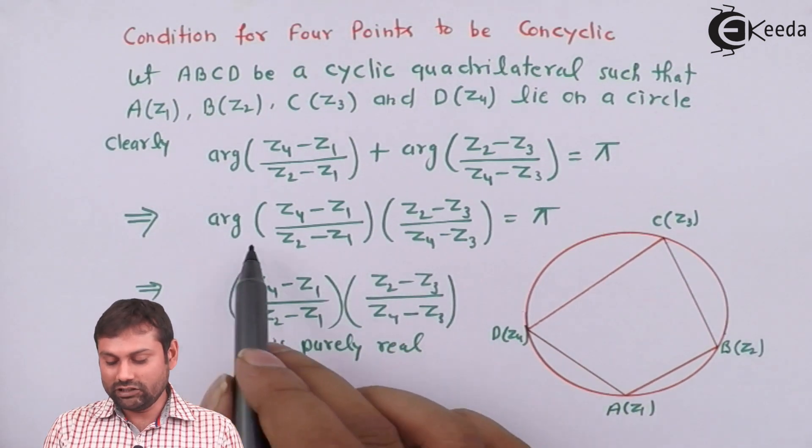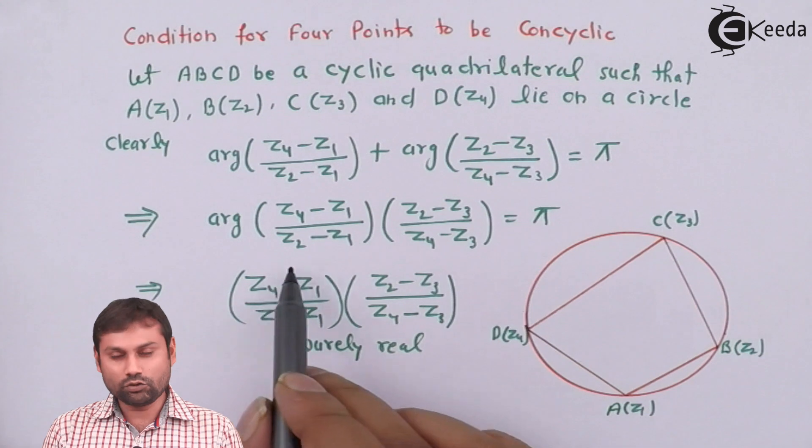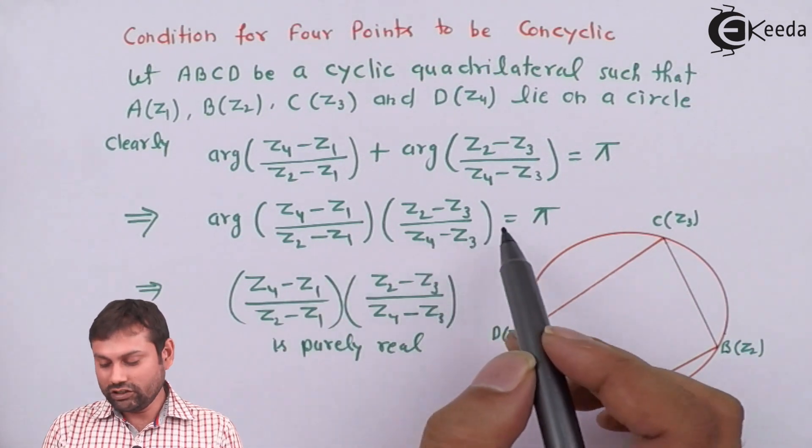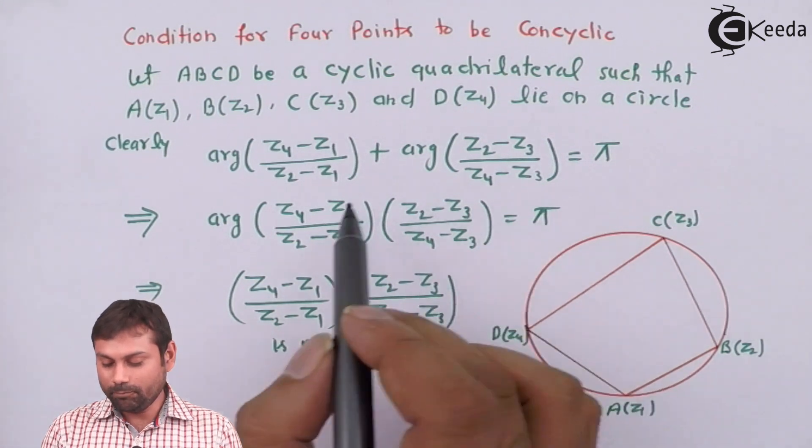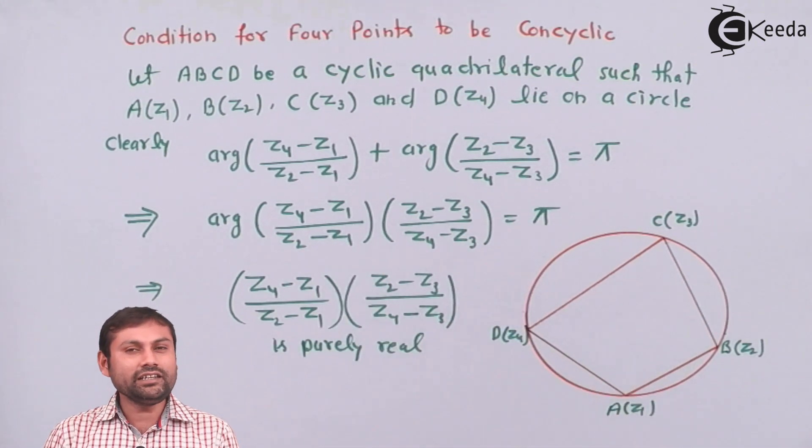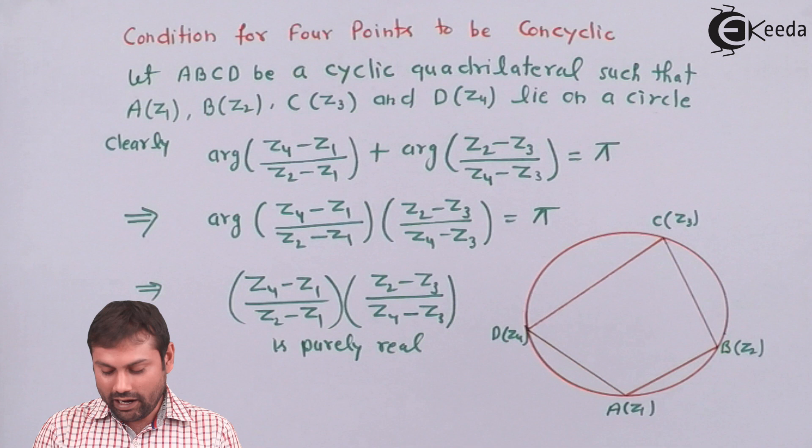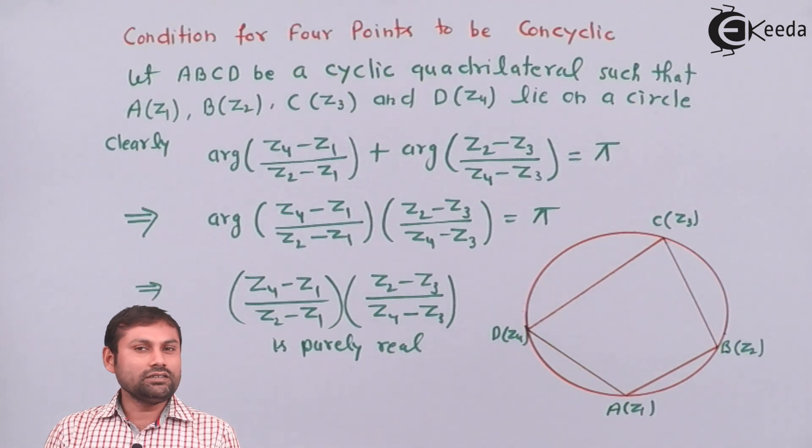So that would be argument of (Z4 minus Z1) upon (Z2 minus Z1) into (Z2 minus Z3) upon (Z4 minus Z3) equals to π. Clearly, if the argument of any complex number is π, so that would be purely a real number.